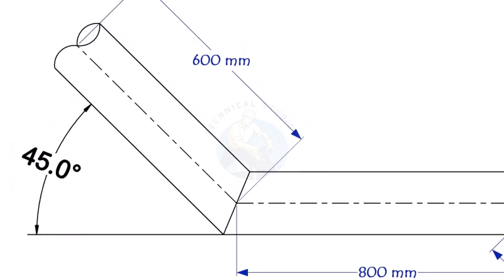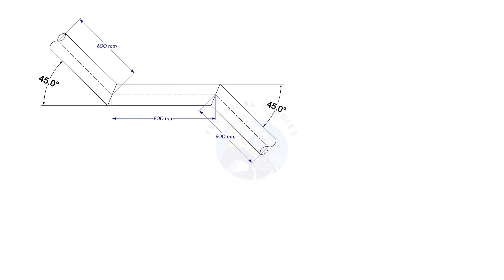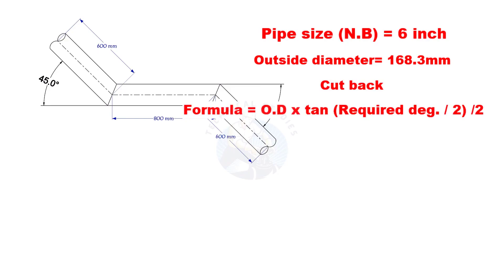This method is suitable for cutback of any degree. The outside diameter of a 6 inch pipe is 168.3 millimeters. Cutback is OD multiplied by tan half degree, divided by 2.